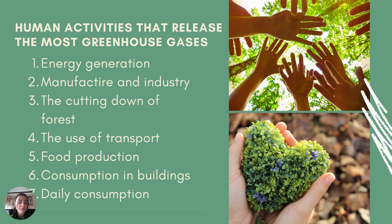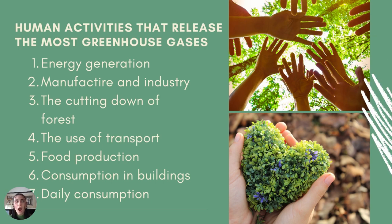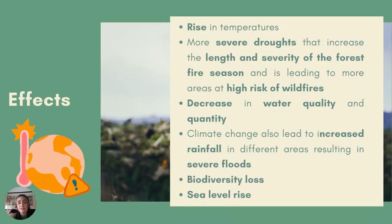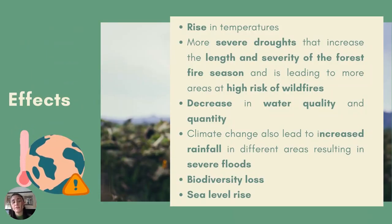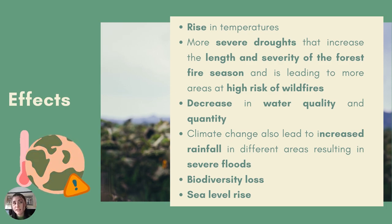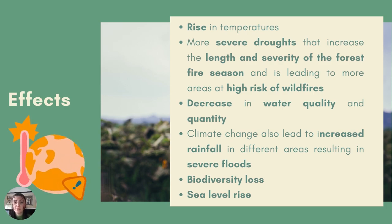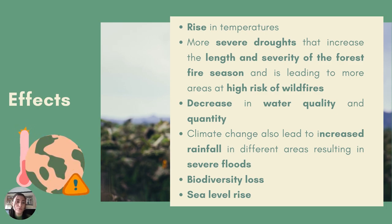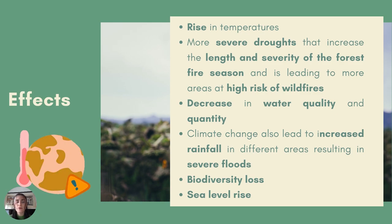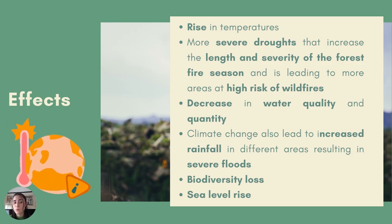And finally, our daily consumption, because our lifestyles have a big impact on our planet. So let's see some effects of climate change. Climate change generates rising temperatures that translate into multiple consequences, such as the melting of the poles or extreme heat waves. Similarly, climate change is causing more severe droughts that increase the land and severity of the wildfire season.